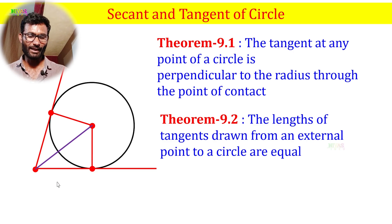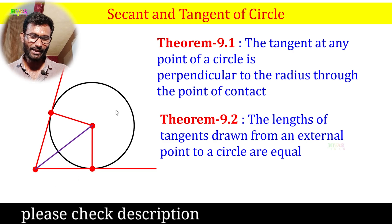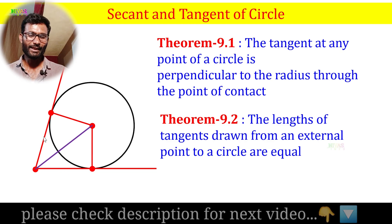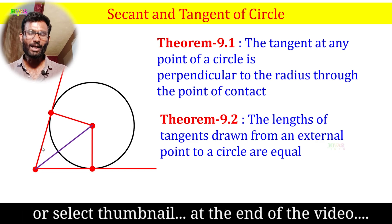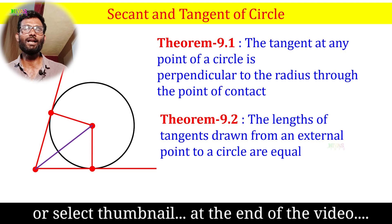A tangent to a circle passing through a point inside the circle cannot be drawn. From an external point, the two tangent lengths drawn to the circle are always equal.